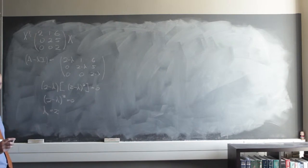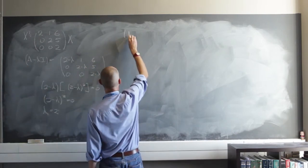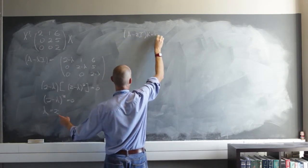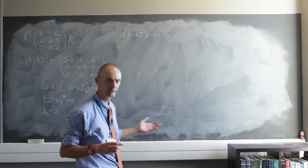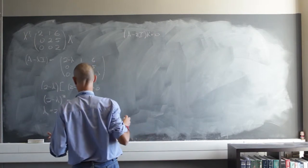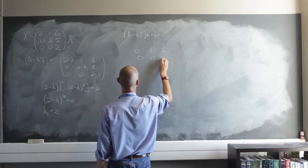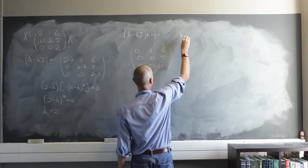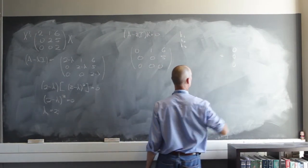With this eigenvalue, I need to find out how many eigenvectors I can get. So if I have A minus 2I times k equals zero — that's the short way. Let's do the longer way using the augmented matrix. I'm going to have the matrix with entries zero, one, six; zero, zero, five; zero, zero, zero — multiplied by k sub one, k sub two, k sub three — equal to the zero column matrix.